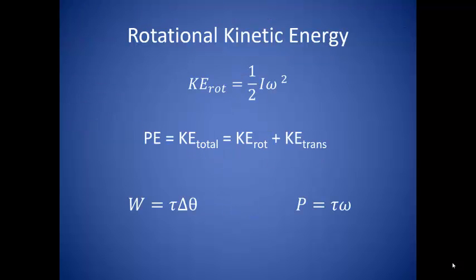So rotational kinetic energy is analogous to linear kinetic energy. We're going to take one-half times the moment of inertia times the angular velocity squared. The potential energy is equal to the total kinetic energy, just like it is in linear motion. And work is equal to the force times the distance, or the torque times the angular displacement. And power is equal to the torque times the angular velocity.